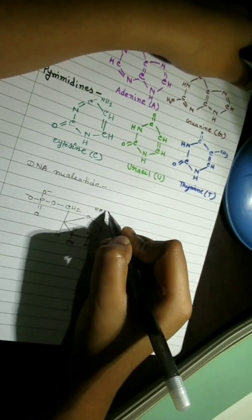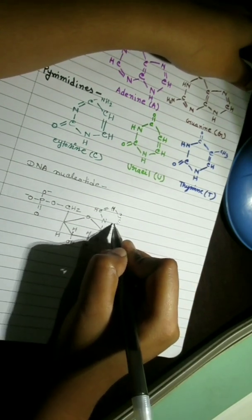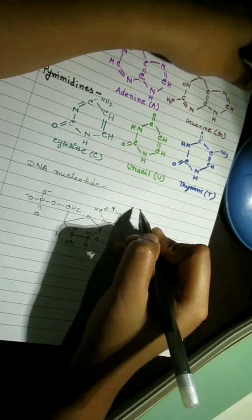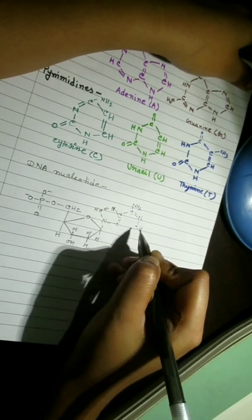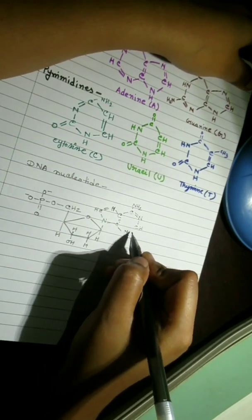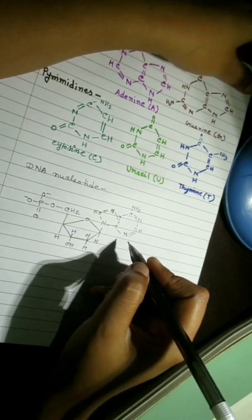In this structure, the base and sugar together make nucleoside. And the entire structure including phosphate group will be denoted as nucleotide.